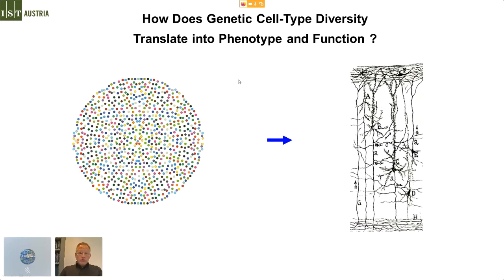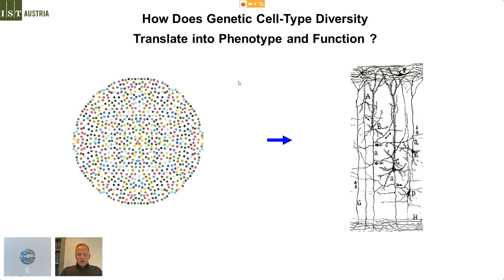The question I really want to ask is: how does this genetic or transcriptomic cell type diversity translate into phenotype and function? In other words, how relevant is it how you classify cell types based on transcriptome? For the rest of the talk, I want to cover this question in more detail and ask specifically: what is the role of gene dosage, and more specifically, what's the function of genomic imprinting in cortical development?